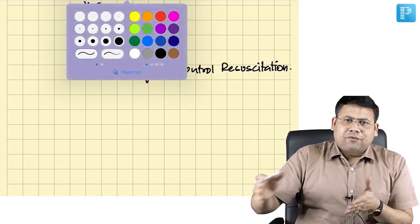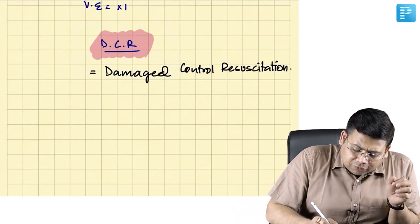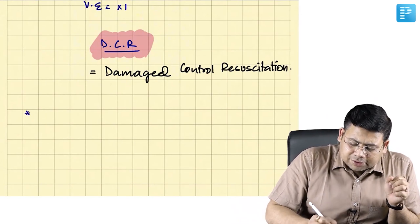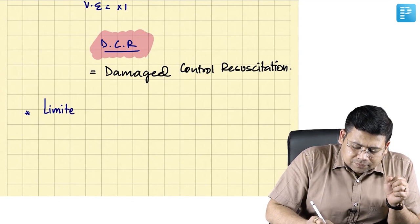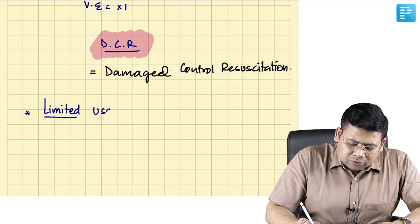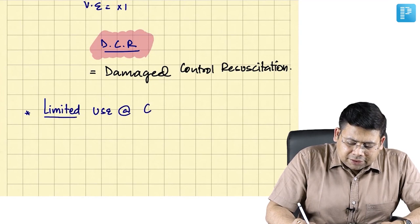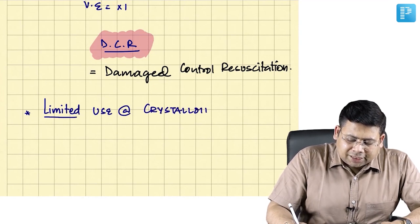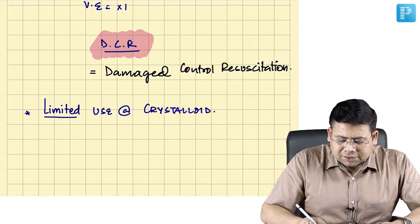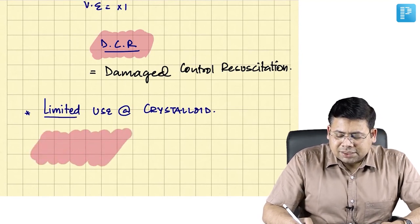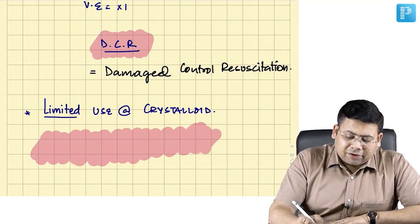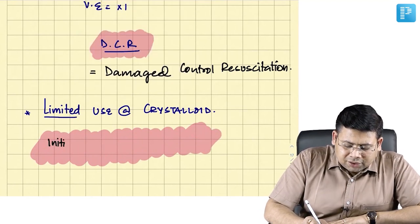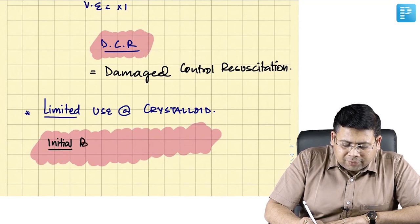There are some principles of damage control resuscitation. These patients are already in grade 3, grade 4 hypovolemic shock. The first and most important point is limited use of crystalloids. The logic says initial bolus, and then maximum volume is also limited. Initially you can give the fluid in bolus of 500 ml to 1 liter.